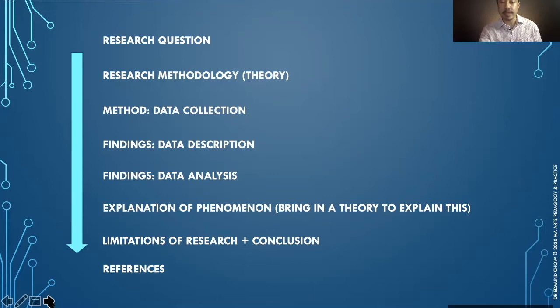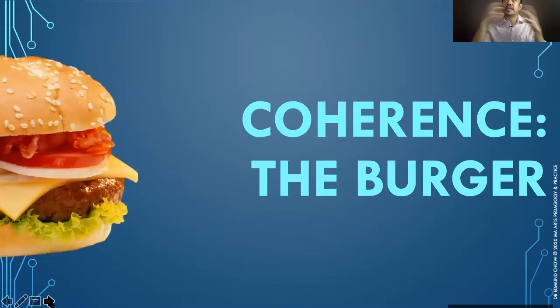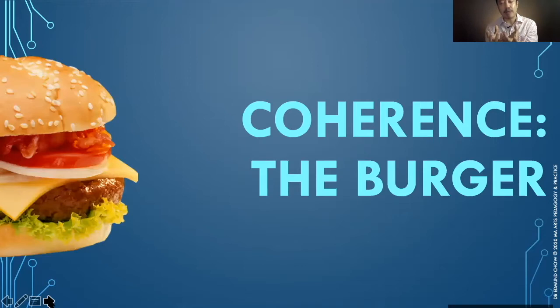Now let's take a look at coherence. Coherence is about the burger. If I'm eating this, I should be able to taste the different components — from the patty, to the tomatoes, to the cheese or onions, and the bread that sandwiches everything. So coherence is about sandwiching the front, the middle, and the end, so that whatever I eat makes sense to me, that I know I'm eating a burger.